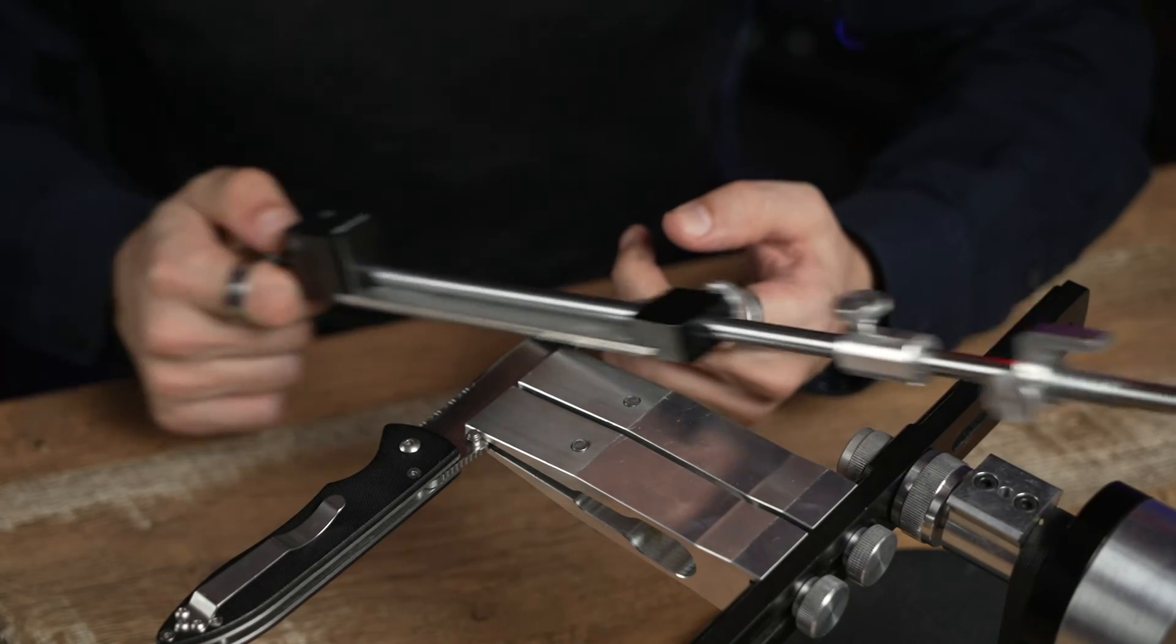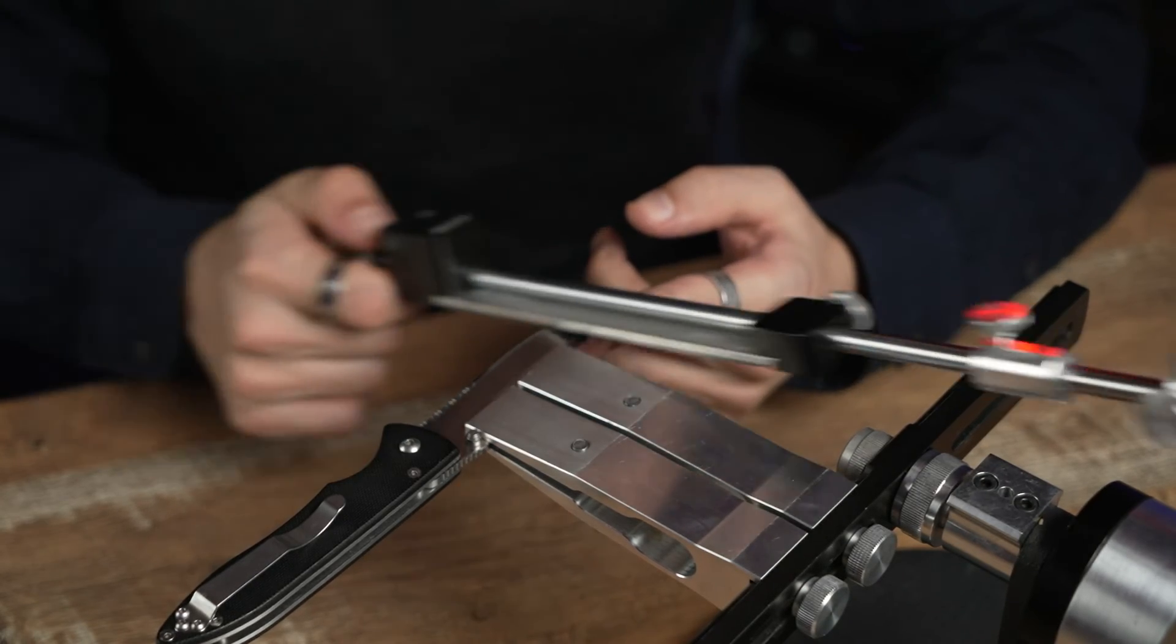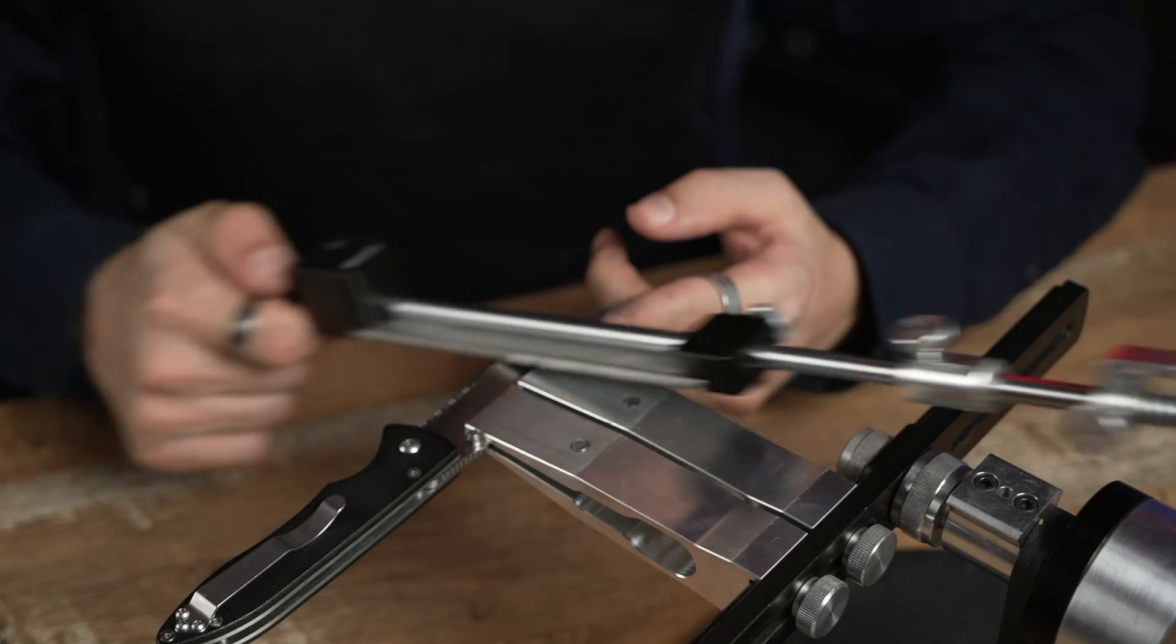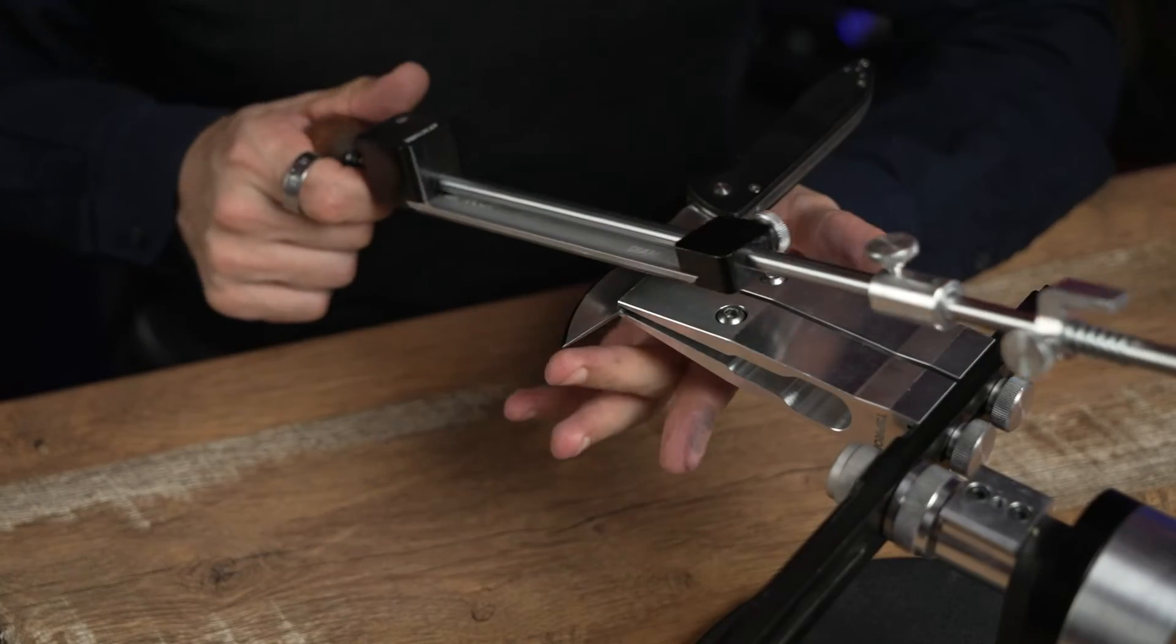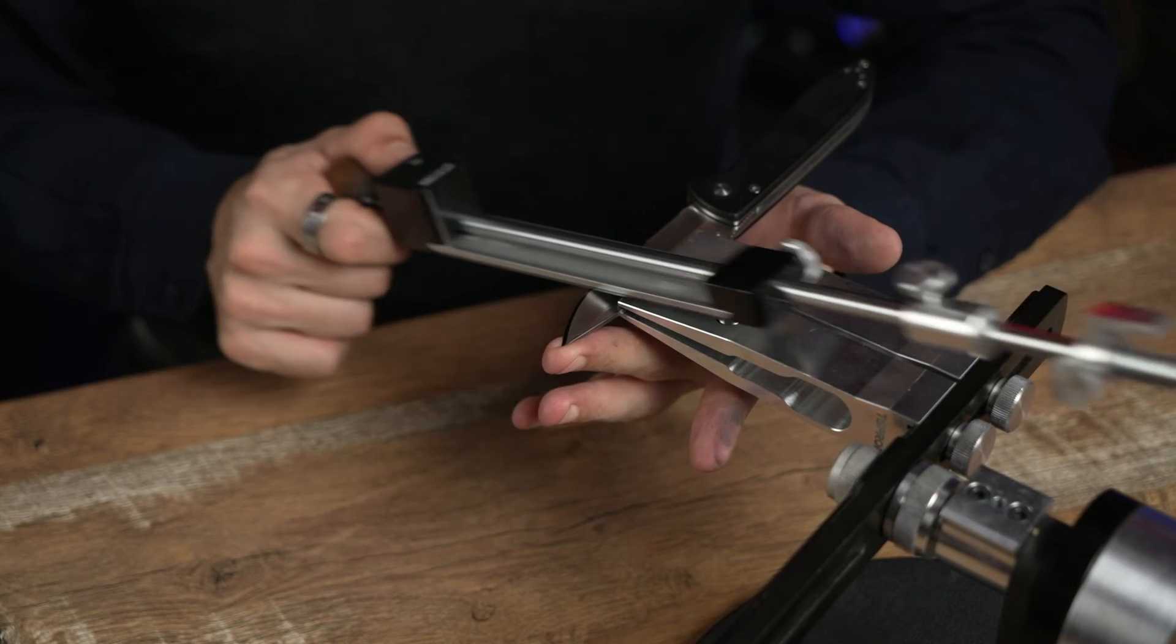If on one side we are getting a bevel that's very narrow, we will process this side longer to prevent excessive removal of the metal.